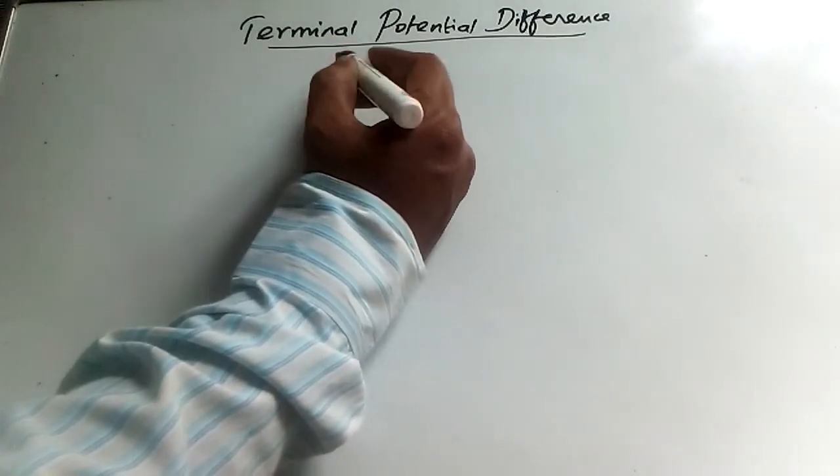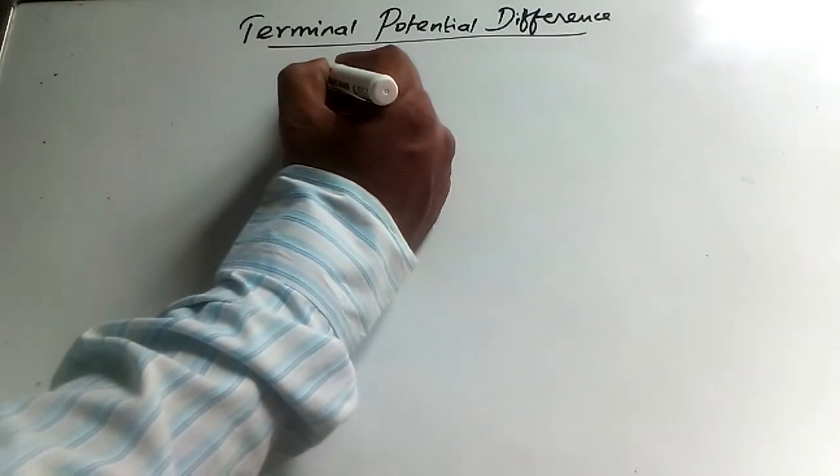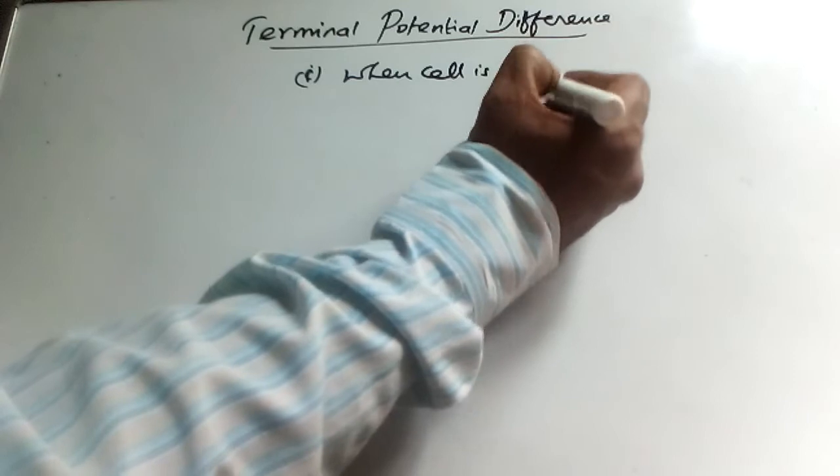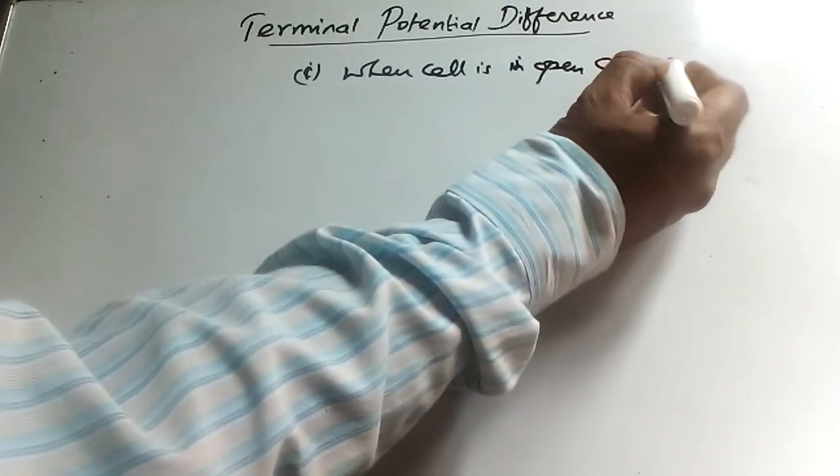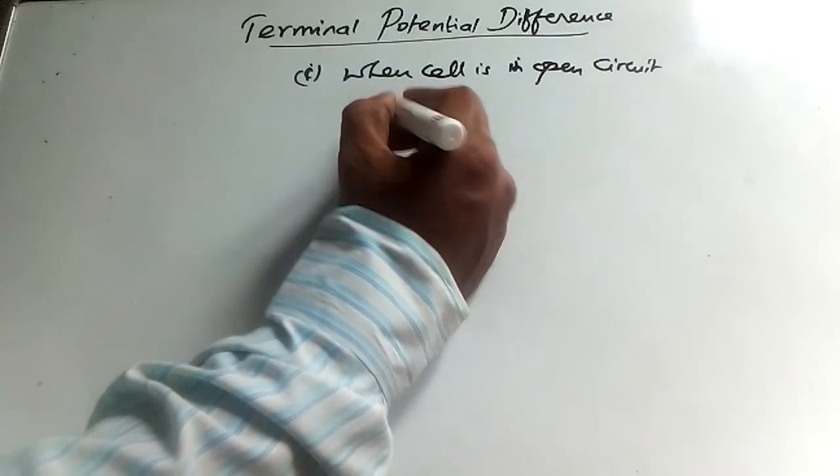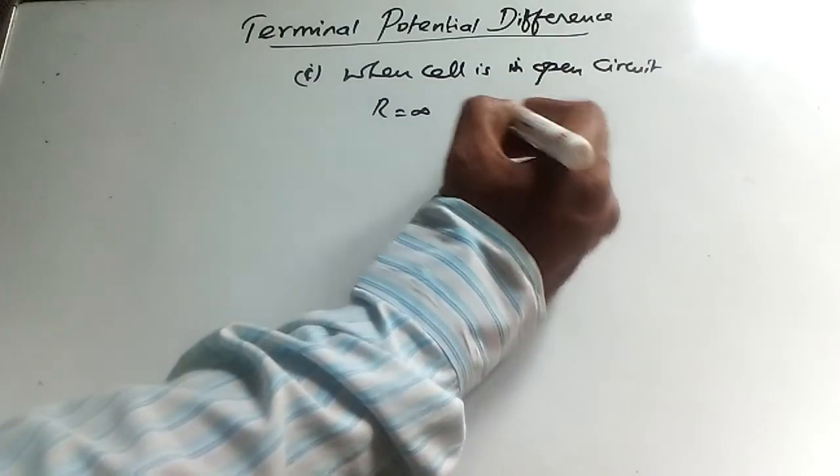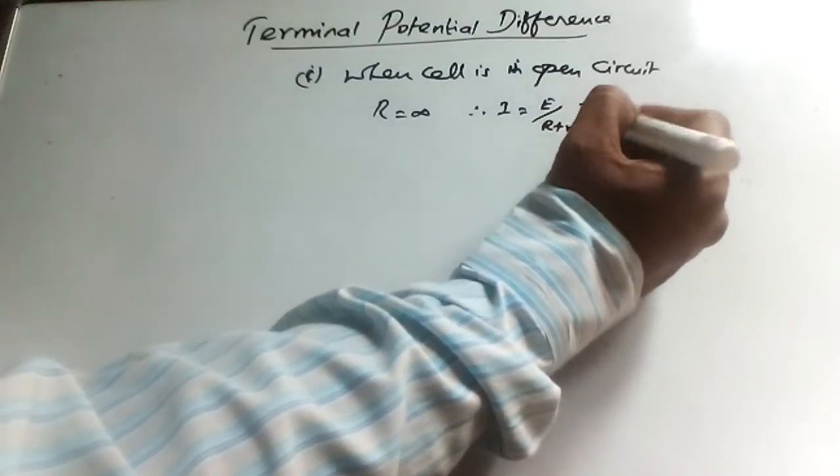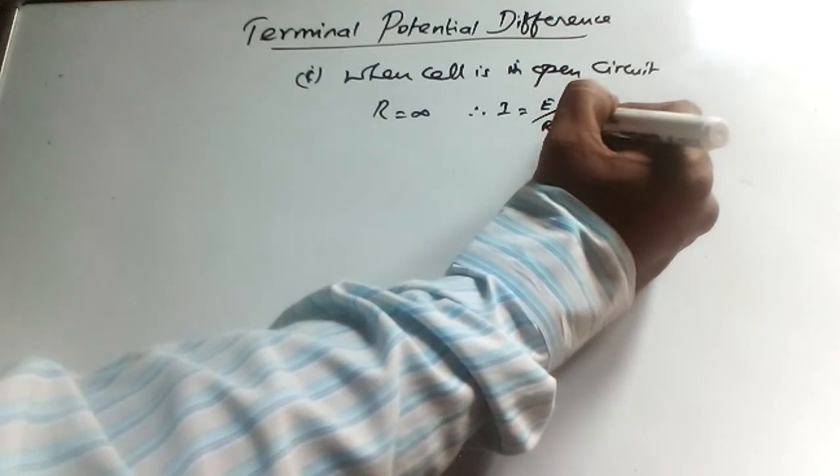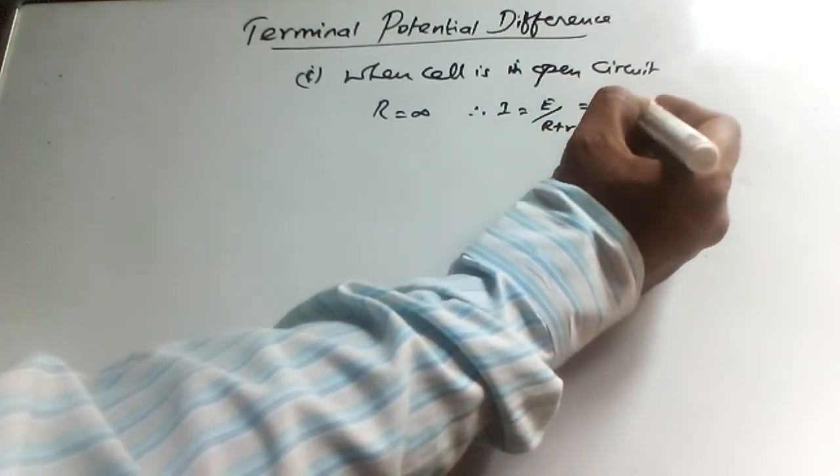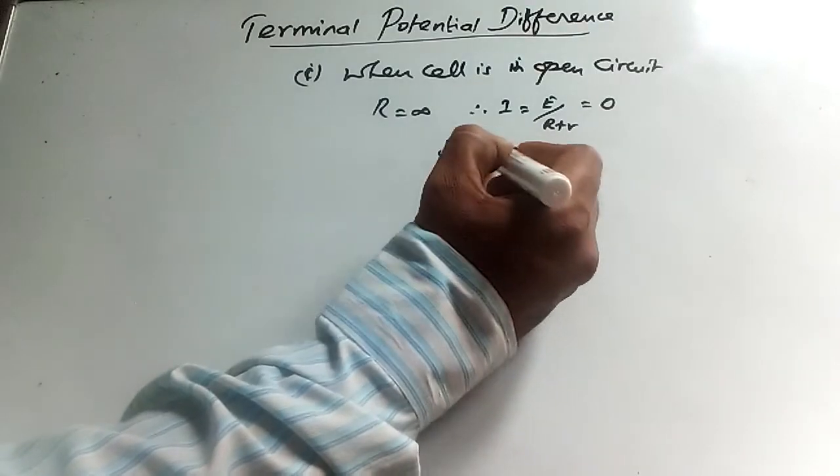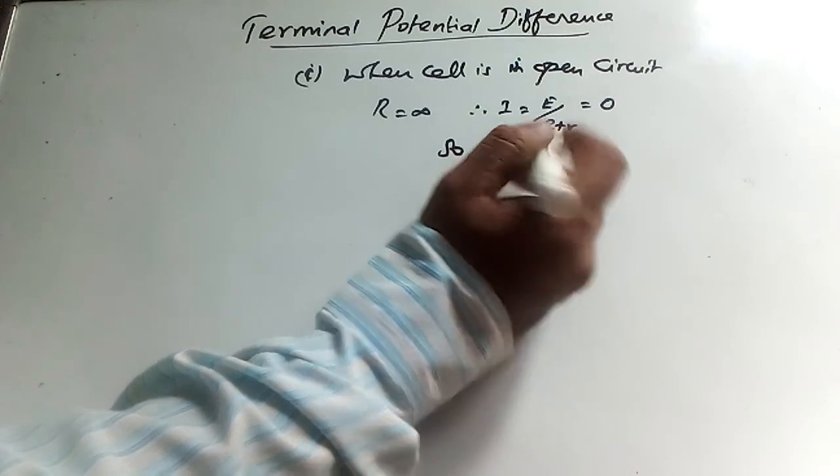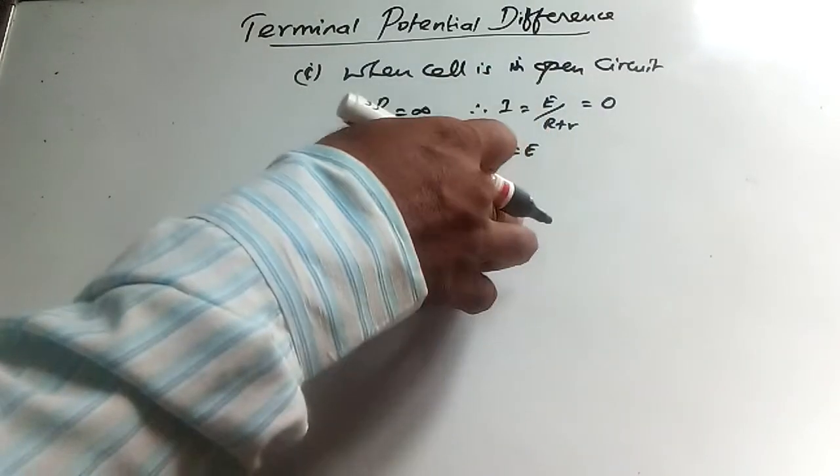You can find the terminal voltage difference when cell is in open circuit. When cell is in open circuit, that is switch is not closed, R equals infinity. That's why I equals E divided by R plus r, which is nothing but zero, because R plus r is also infinity. So I equals zero, therefore V equals E. This terminal voltage is equal to EMF of the given cell. So in open circuit, terminal voltage difference is equal to EMF and is the maximum voltage difference which a cell can provide.